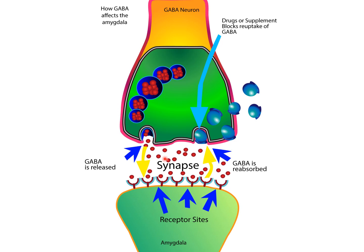So this is how GABA affects the amygdala. It's inhibitory — when GABA reaches the GABA receptors post-synaptically, it inhibits the amygdala and therefore reduces anxiety.